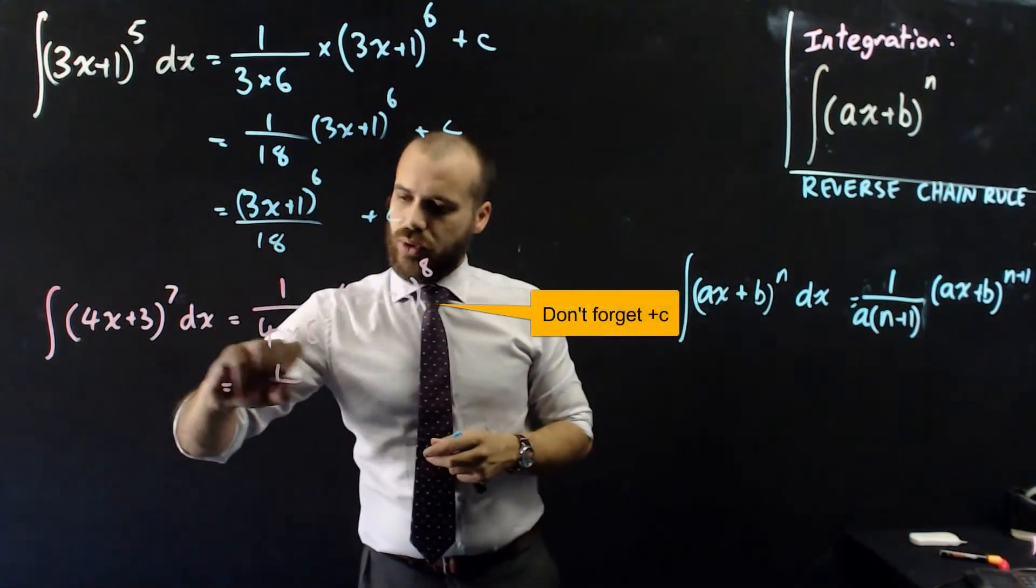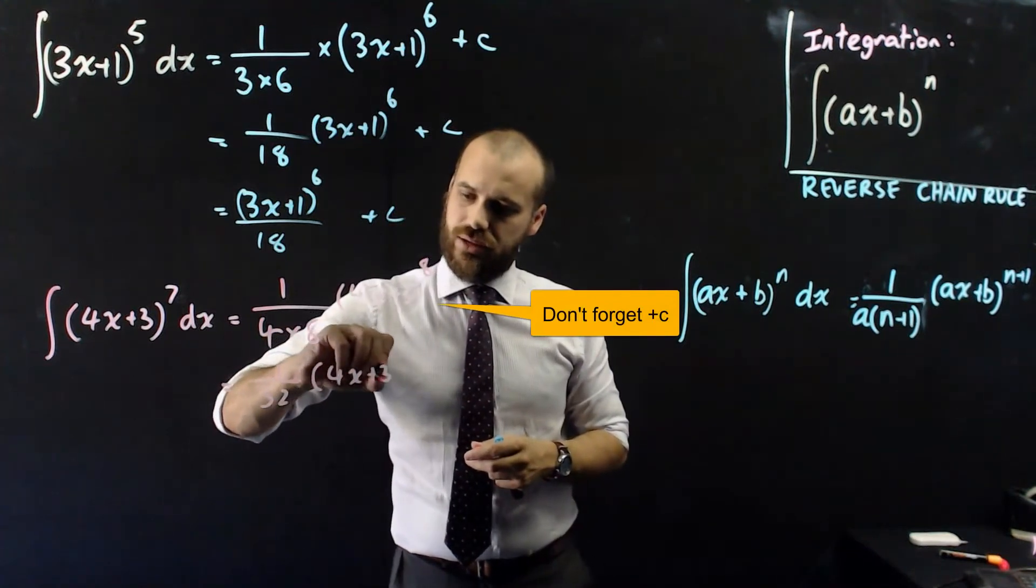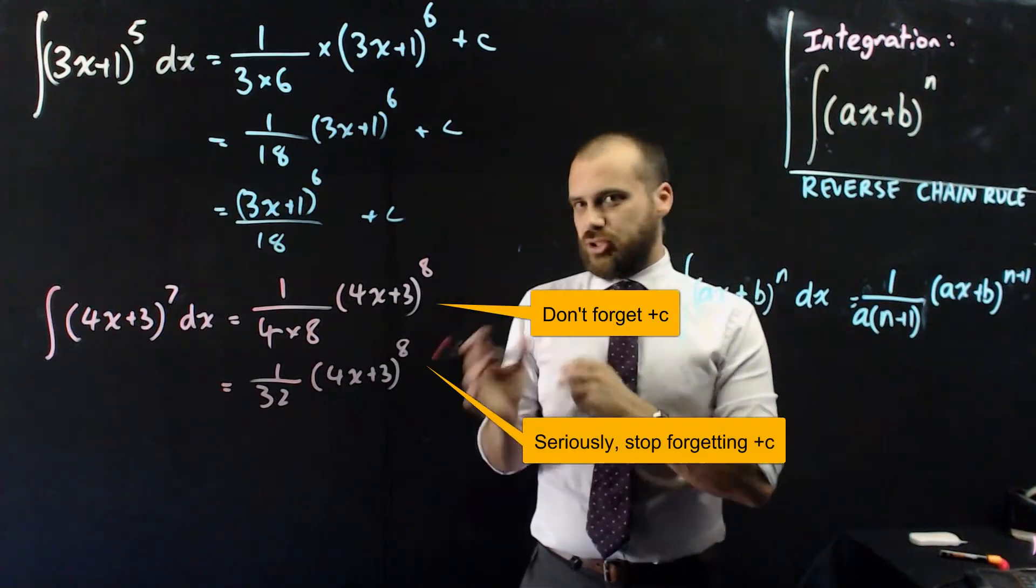We end up with 1 over 32, 4x plus 3 to the power of 8. All right, so it's pretty procedural, it should be pretty straightforward.